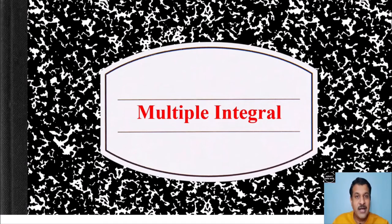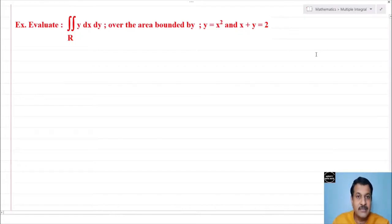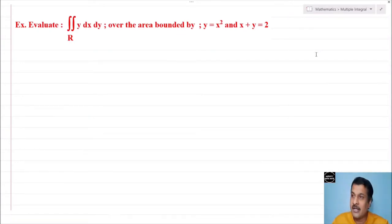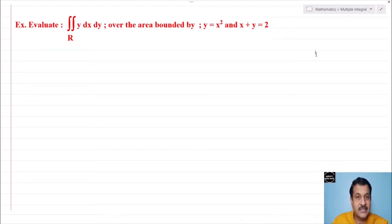Welcome. We continue with double integration — specifically the evaluation of double integration when limits are not given. Consider one example: evaluate double integration over region R of y dx dy over the area bounded by y equal to x square and x plus y equal to 2. Before starting, I would like to clear one thing.